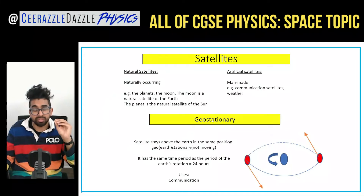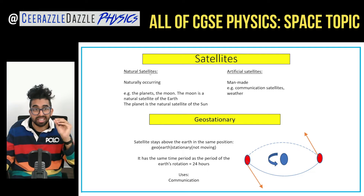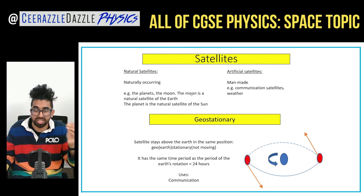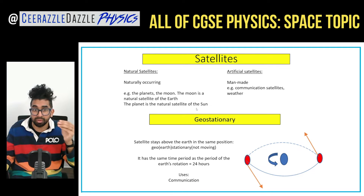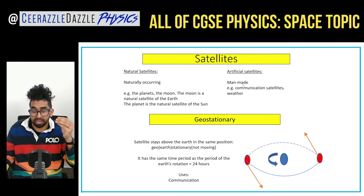Satellites: there are two types of satellites — naturally occurring satellites and artificial satellites. Natural satellites are going to be the planets and the Moon, because the Moon is a natural satellite of the Earth and a planet is a natural satellite of the Sun. Artificial satellites are man-made and they've been placed up there by the human race.